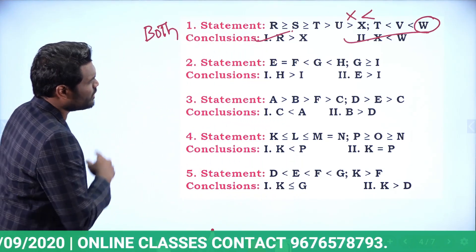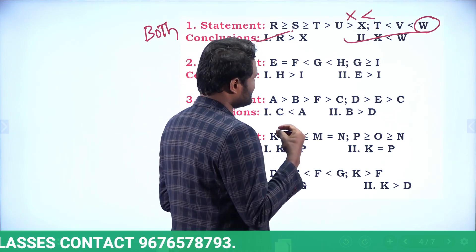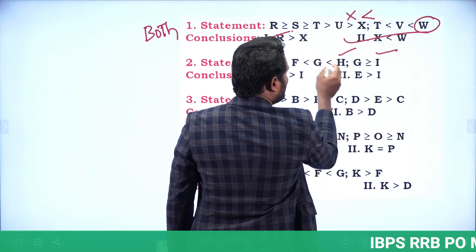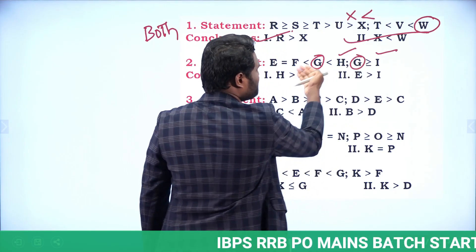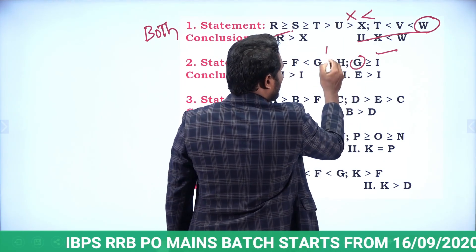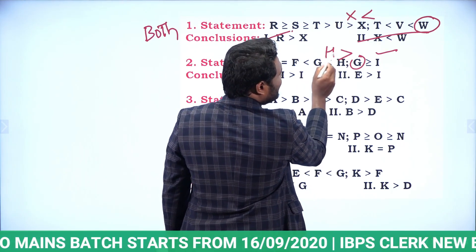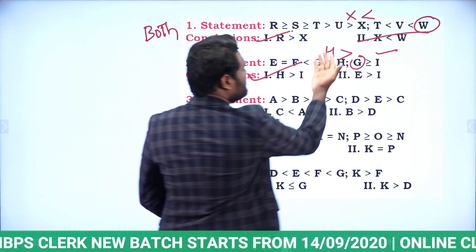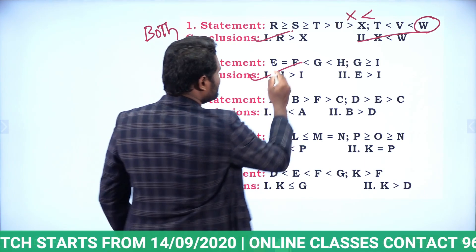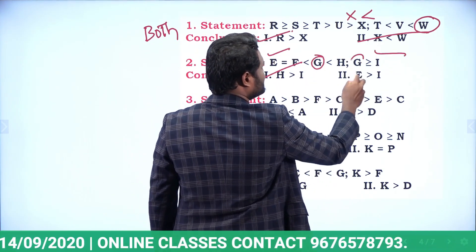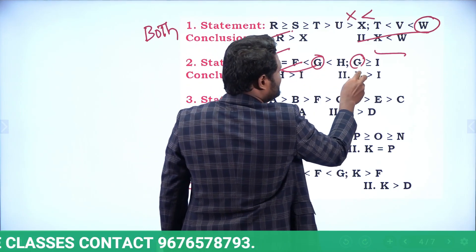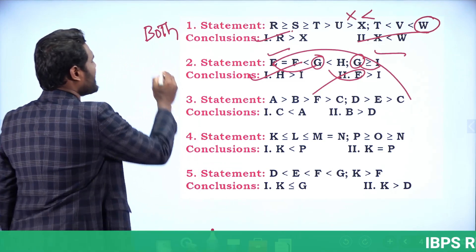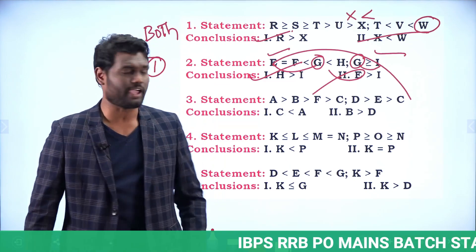Next coded inequalities set: E = F < G < H and G ≥ I. For conclusion H > I: G is the common element. G < H means H > G, and G ≥ I, so common symbol is greater than — H > I is correct. For conclusion E and I: E and G relation is less than while G and I is greater than — opposite symbols means no relation, so this is wrong. Only conclusion one follows.